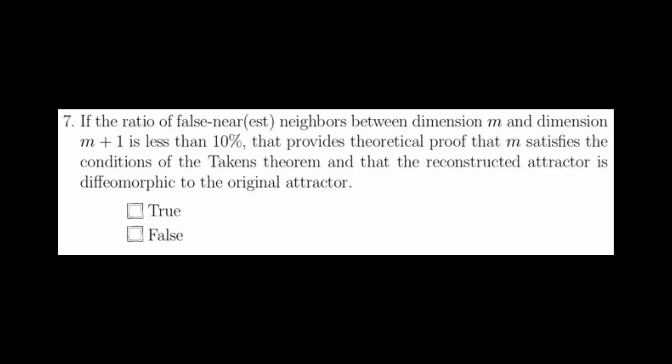And finally, if the ratio of false nearest neighbors between dimension M and dimension M plus 1 is less than 10%, that provides theoretical proof that M satisfies the conditions of the Takens theorem, and that the reconstructed attractor is diffeomorphic to the original attractor. This is most definitely false.